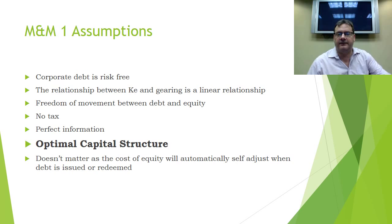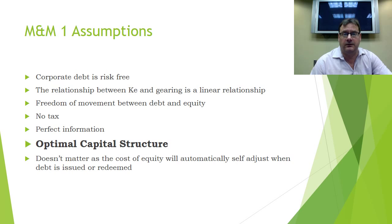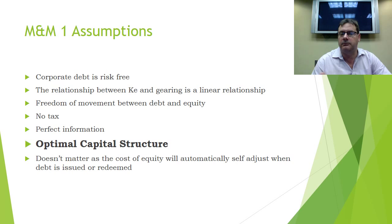Finally, there must be perfect information. If the company issues £10 of additional debt, equity holders must know about it and adjust their required rate of return accordingly. If there's no perfect information, you wouldn't know about any additional debt or redemption and therefore wouldn't adjust your risk-return requirements. You need to know this, because it's actually more important than the graph — it's what will hit you when you come to later topics.